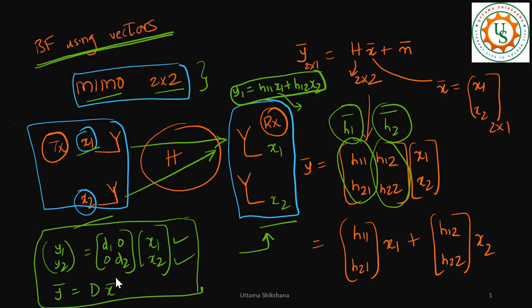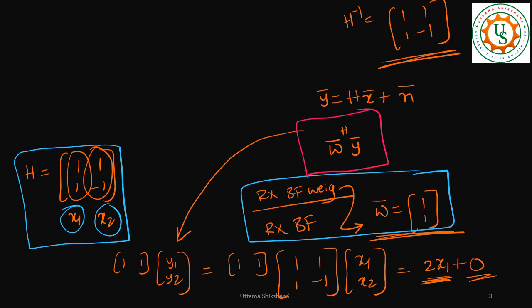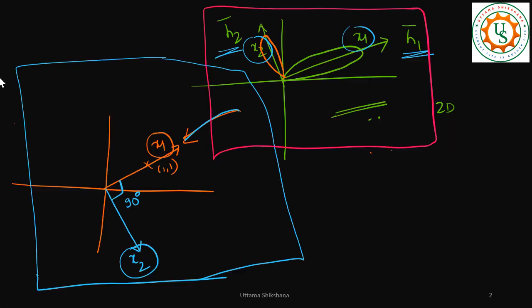Let me quickly give an introduction before moving to further concepts. In the MIMO channel model, y = Hx + n, the columns of the H matrix represent directions in space. I considered a special case where H is a 2x2 matrix with orthogonal columns. In this case my signal in the space was transmitted along two orthogonal directions as shown in the diagram.